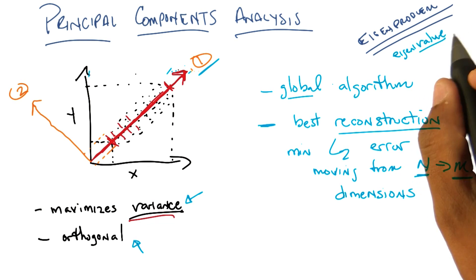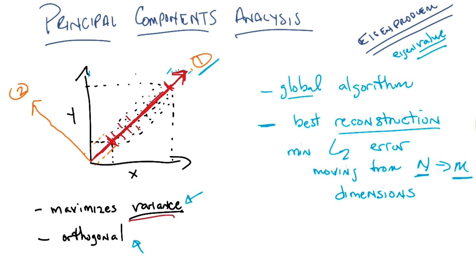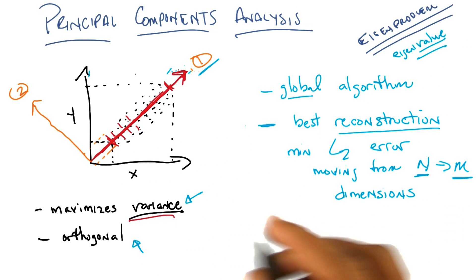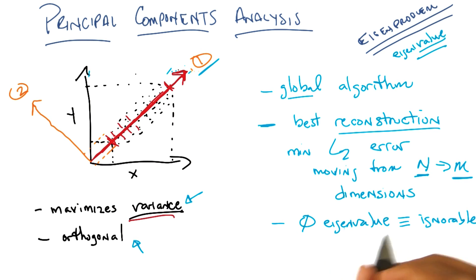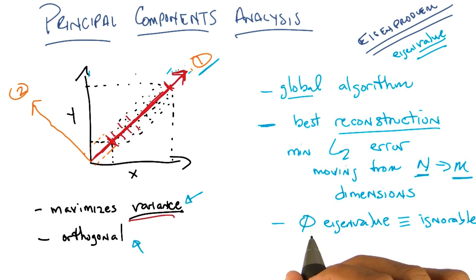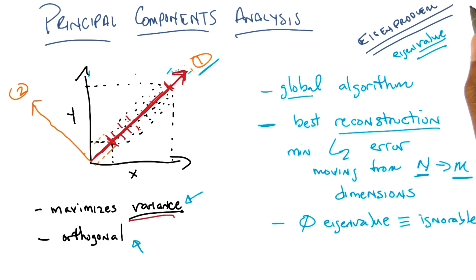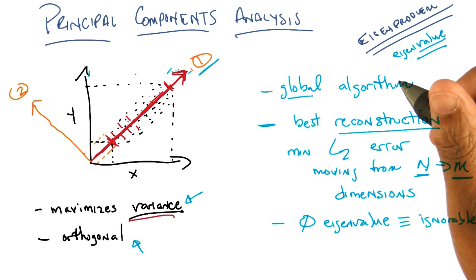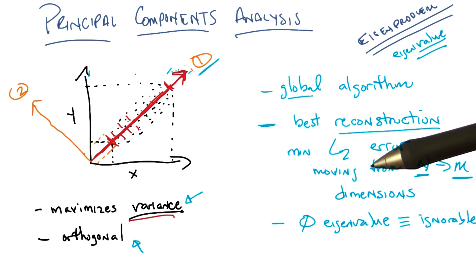Exactly. And in fact, here's something kind of interesting: it turns out that if the eigenvalue of some particular dimension is equal to 0, then it means it provides no information whatsoever in the original space. So if I have a dimension that has an eigenvalue of 0, I can throw it away and it will not affect my reconstruction error. If there's no variance, that's the same thing as saying it has 0 entropy, because it never changes. So it's irrelevant.